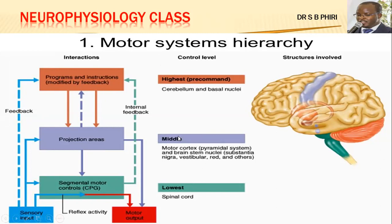Going down, we have the middle level, which is the motor cortex itself. The motor cortex works in association with the pre-command areas for storage of initiation and planning of movement. Once you want to execute movement you involve the middle level — the motor cortex — where you have the pyramidal system, which are the same descending tracts, pyramidal and extra-pyramidal. The brain stem nuclei are involved in the extra-pyramidal system, including the reticular formation and the red nucleus.